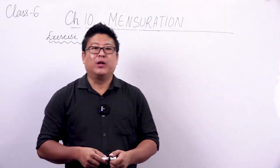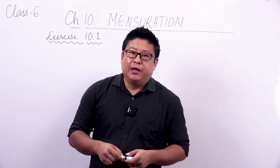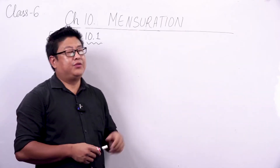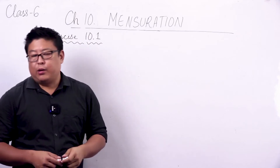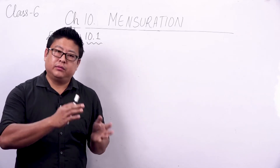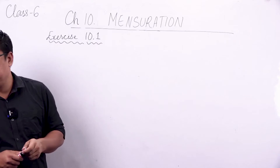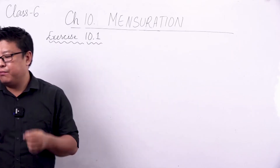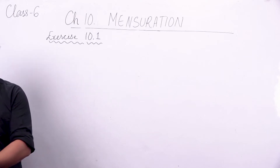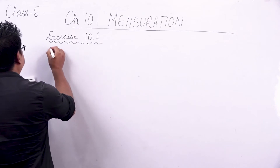Hello dear students and welcome back to mathematics class for class 6. We will continue with chapter 10, mensuration. We have learned about the different concepts for perimeter and area, so we will put it into practice by solving some problems in exercise 10.1, page number 212 of your textbook. Let's look at the first question.